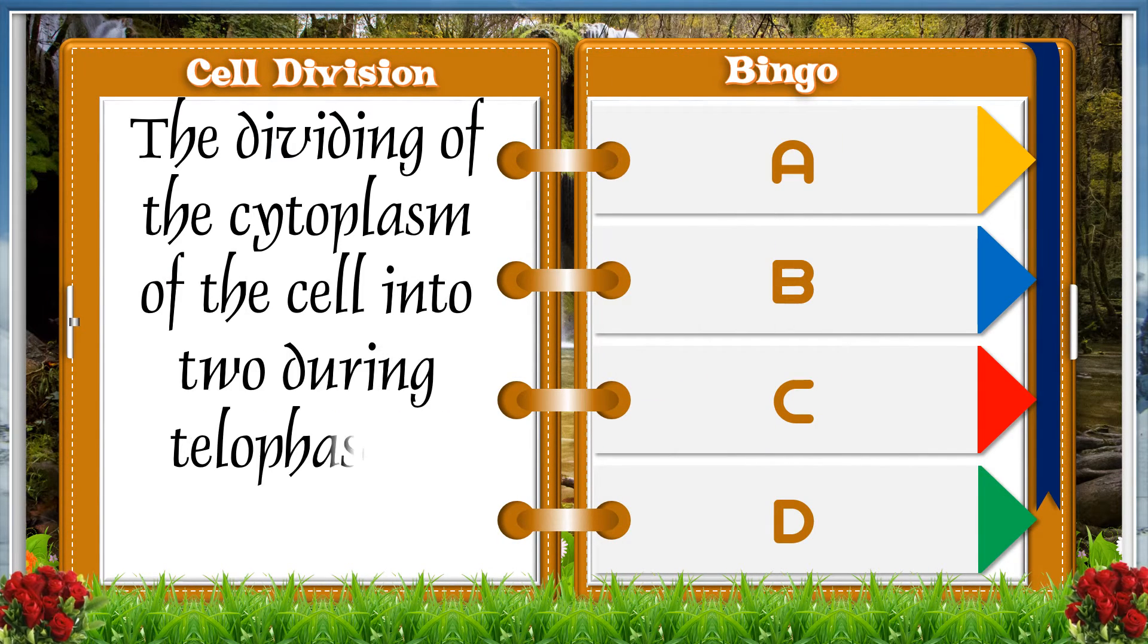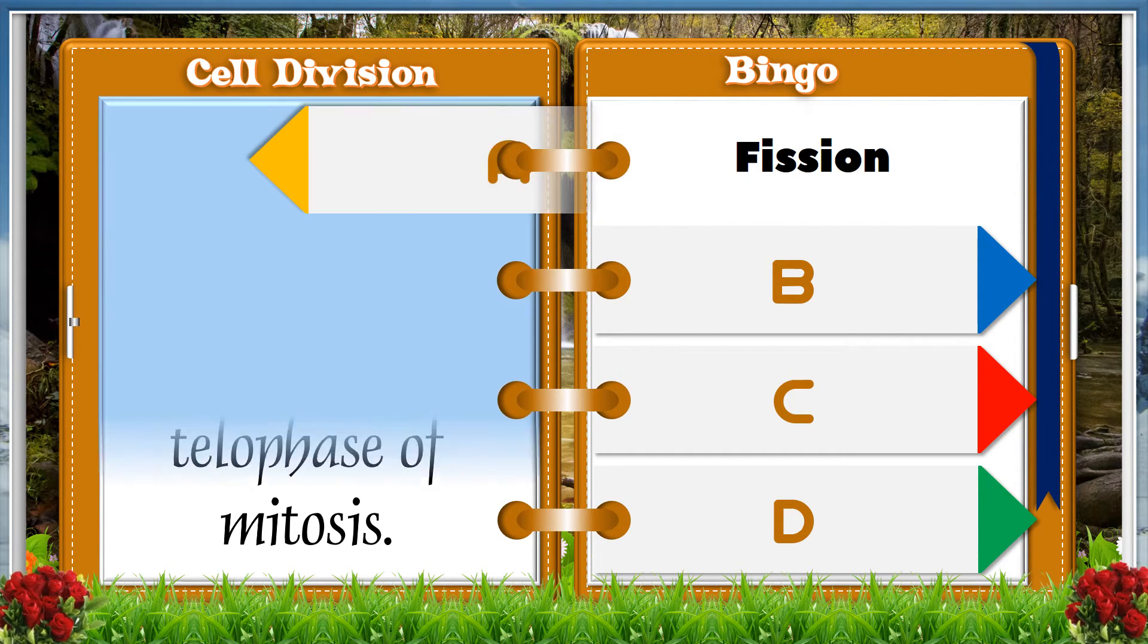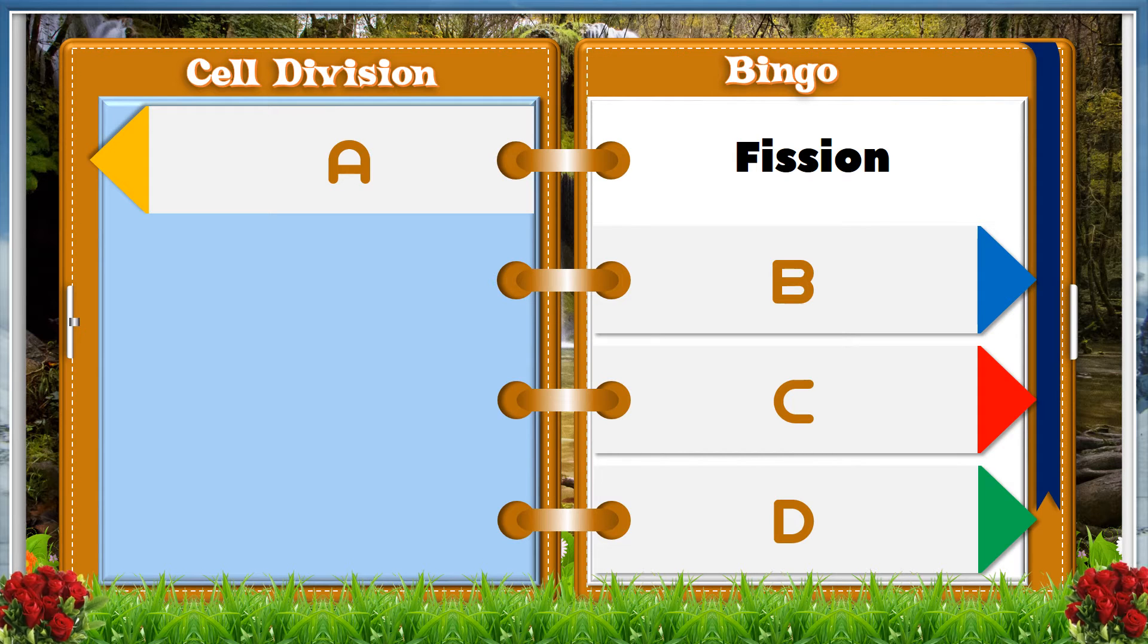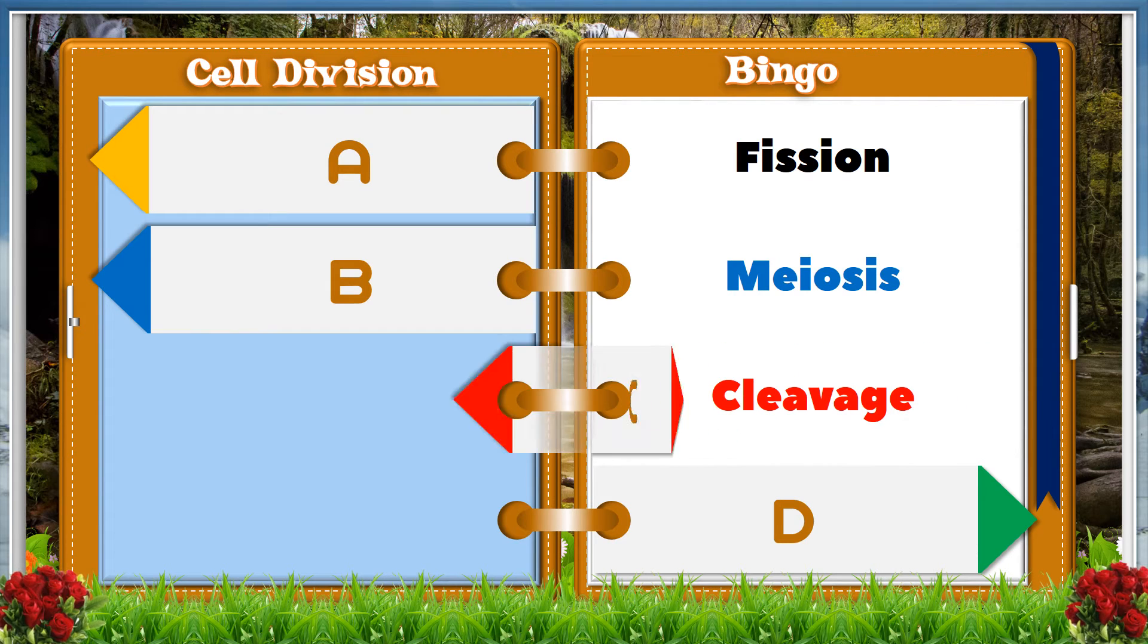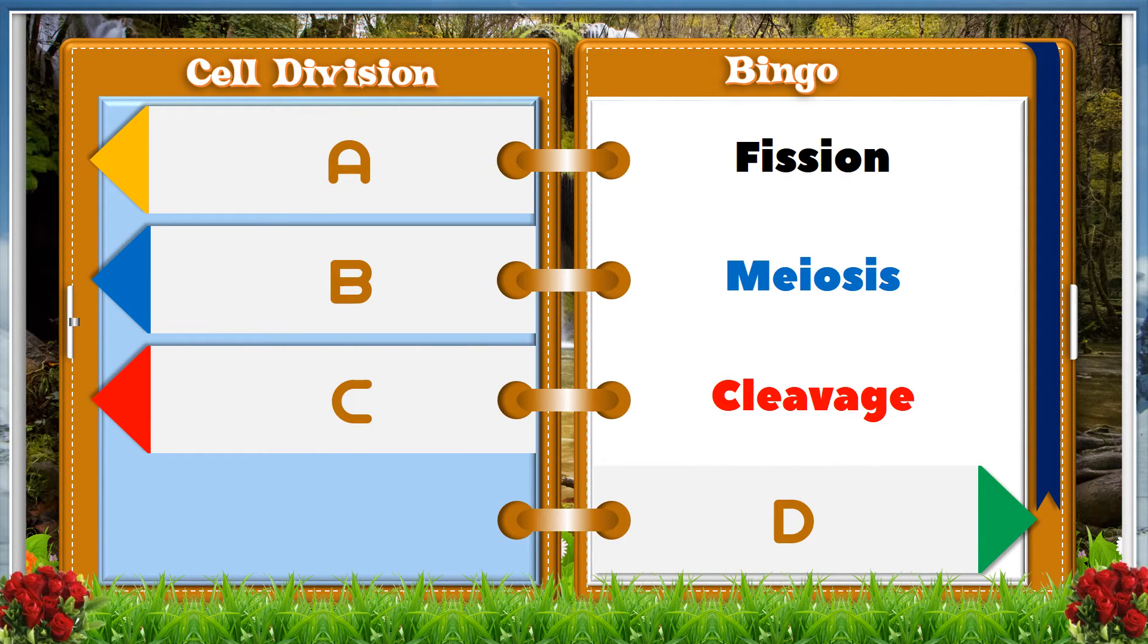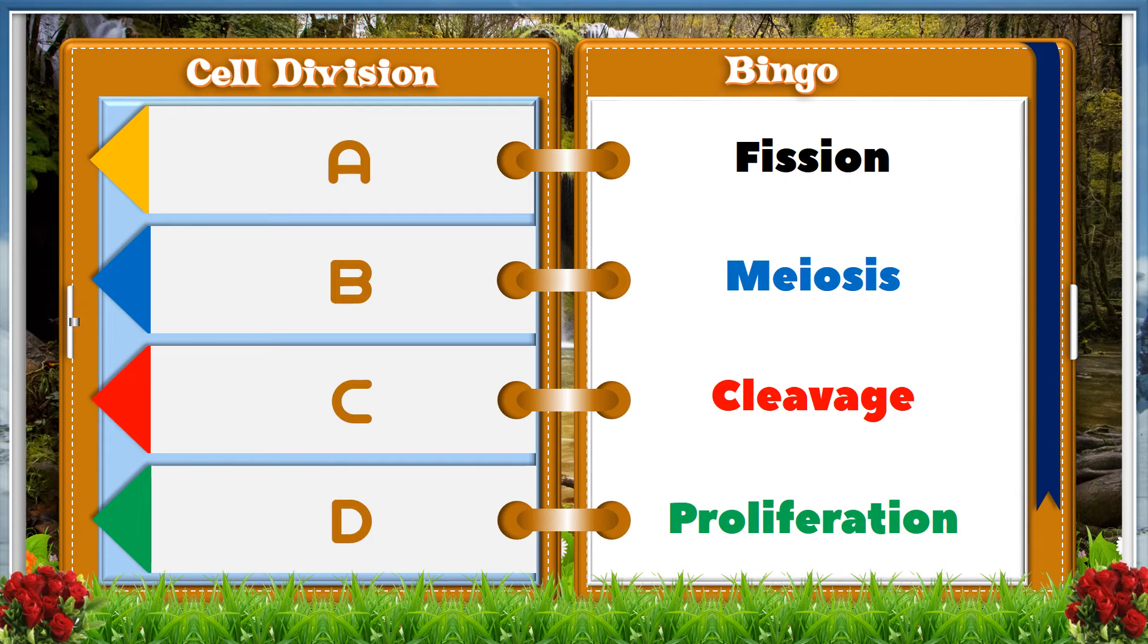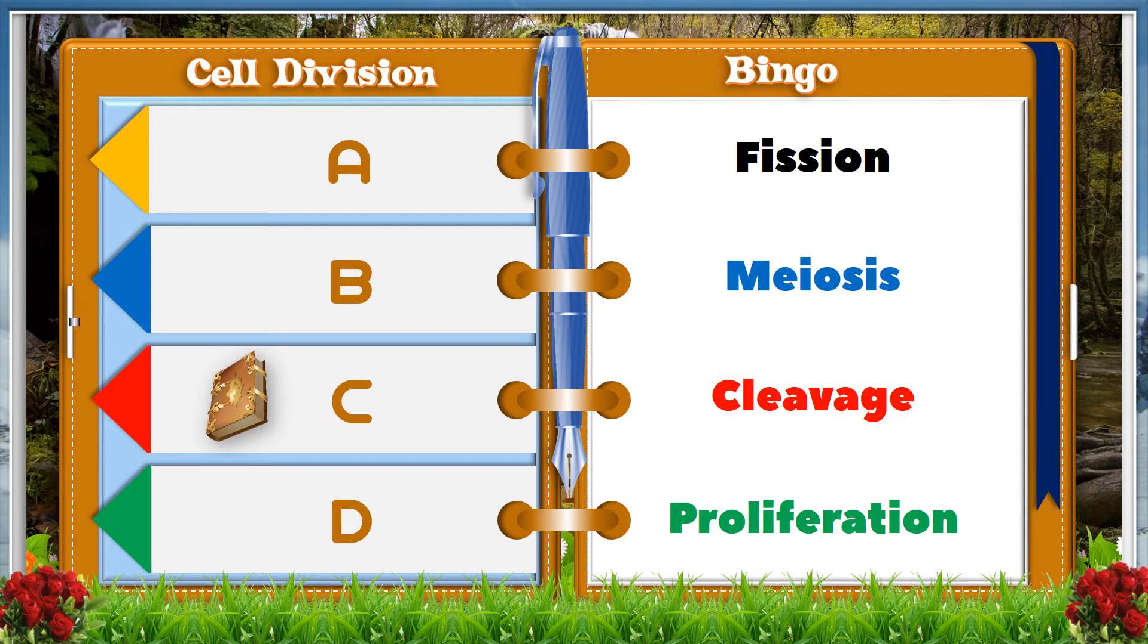The dividing of the cytoplasm of the cell into two during telophase of mitosis. A fission, B meiosis, C cleavage, D proliferation. And the answer is C cleavage.